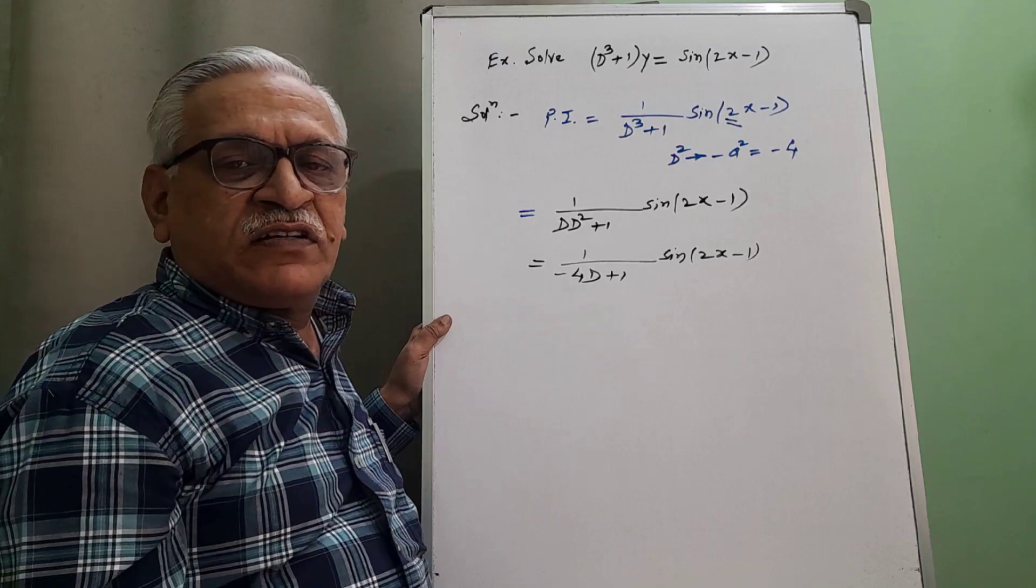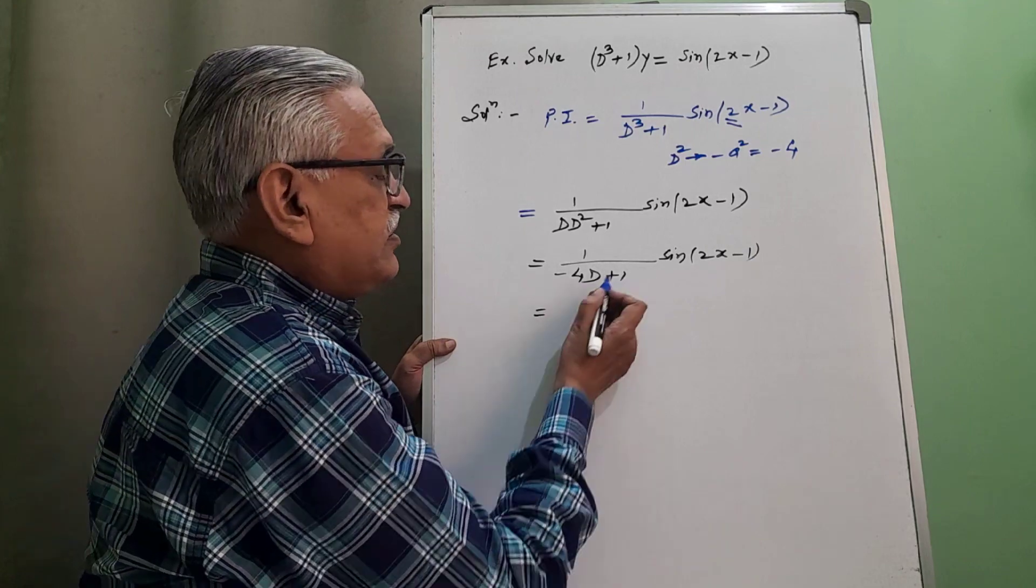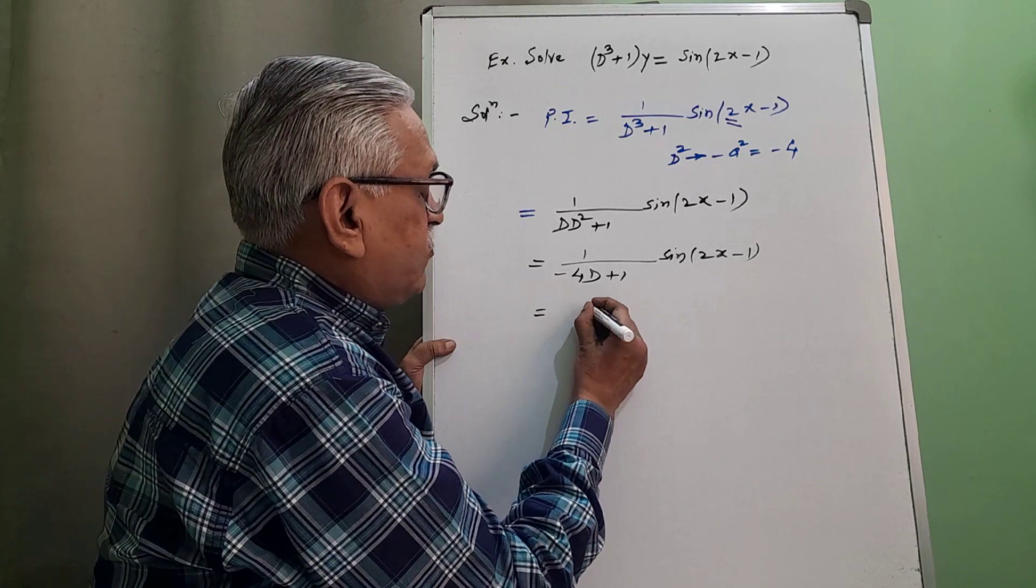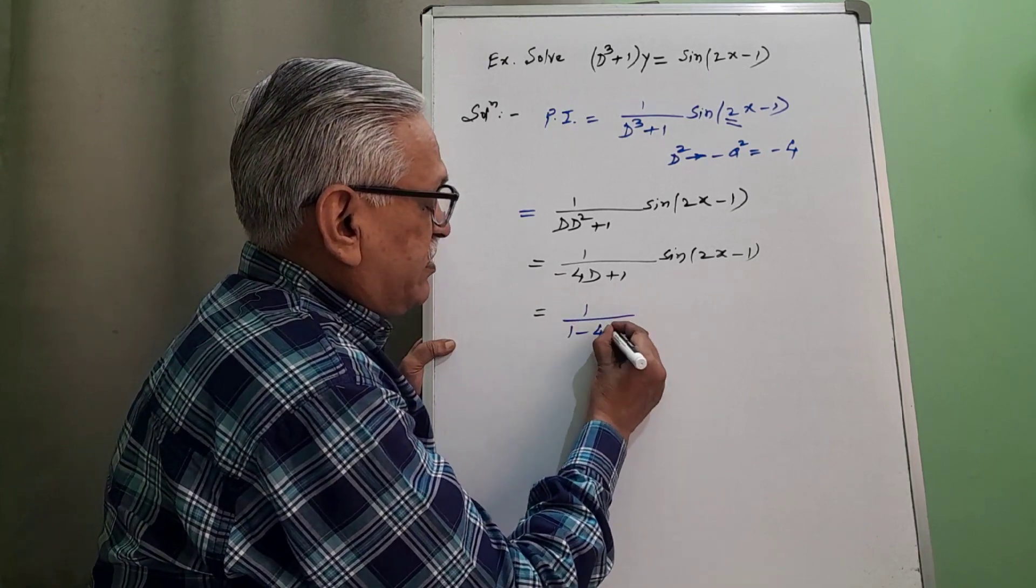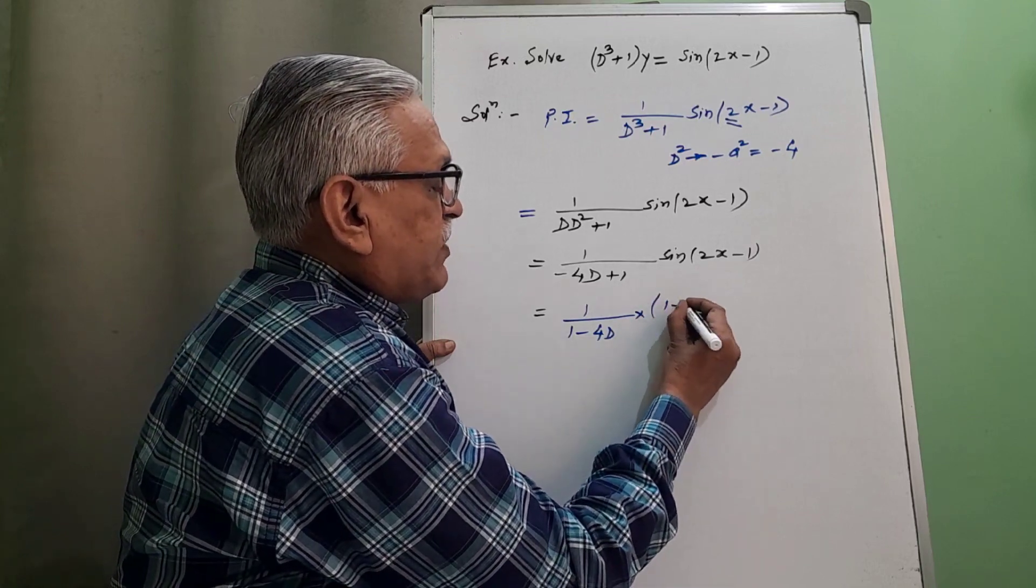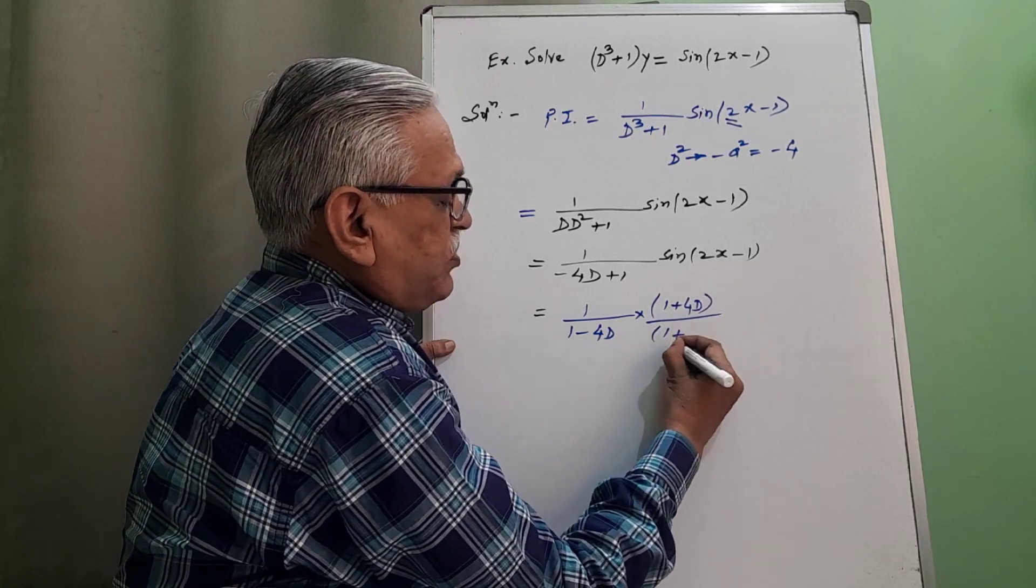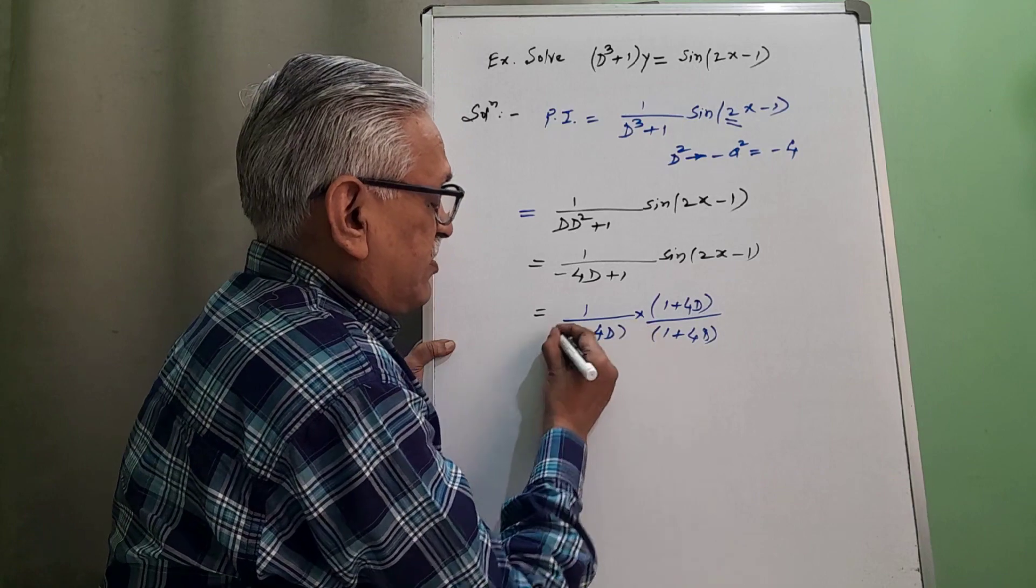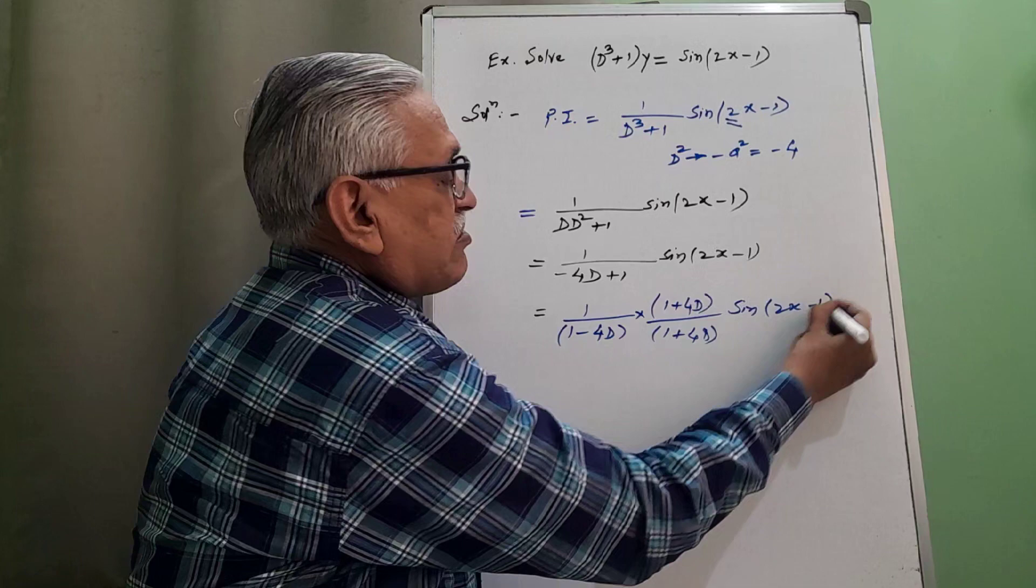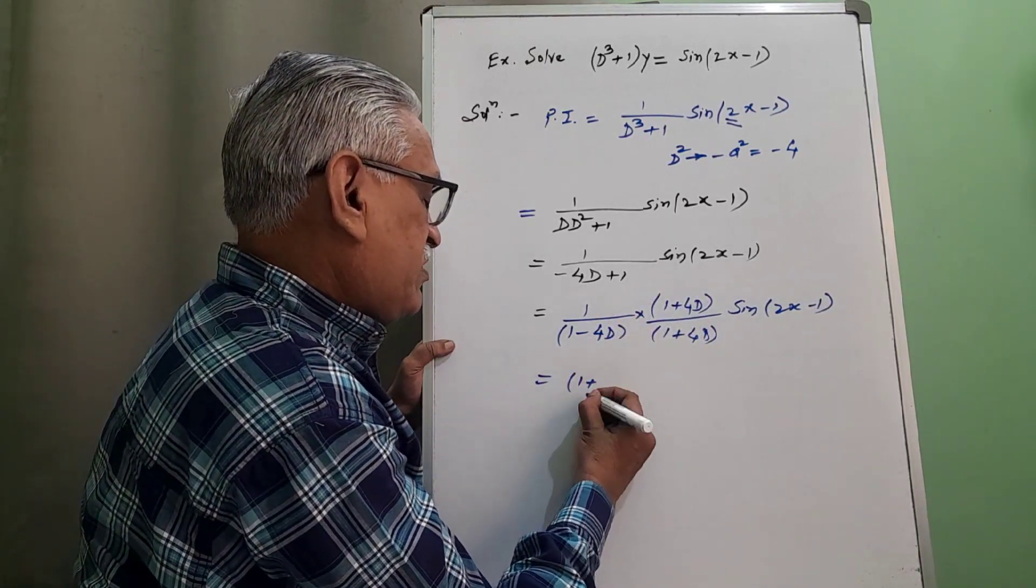For further replacement, the term of d square is absent here, and therefore we rationalize this. Multiplying and dividing by its conjugate, the conjugate is therefore 1 upon 1 minus 4d. The conjugate of that term is 1 plus 4d divided by 1 plus 4d as it is, no change.